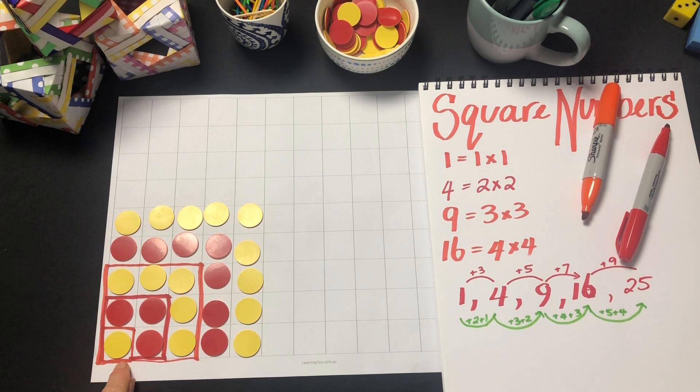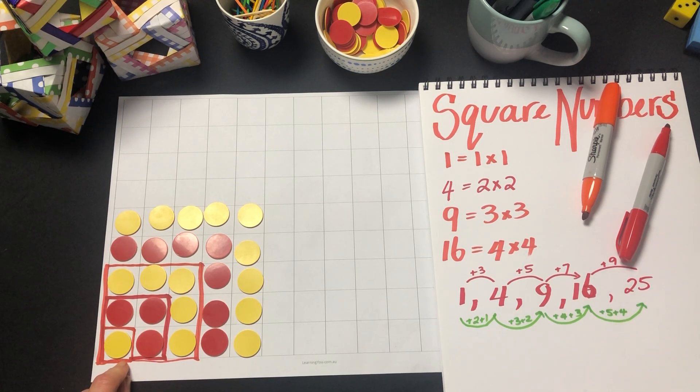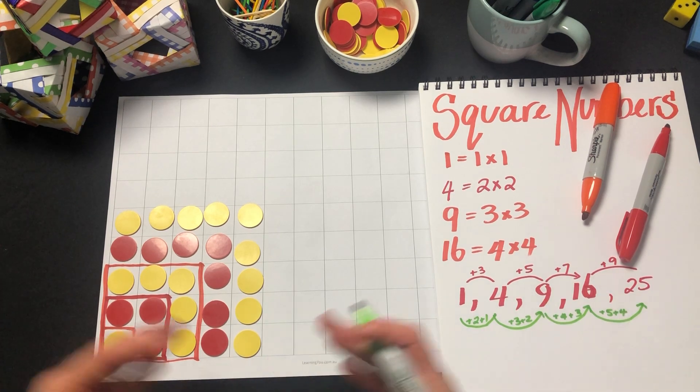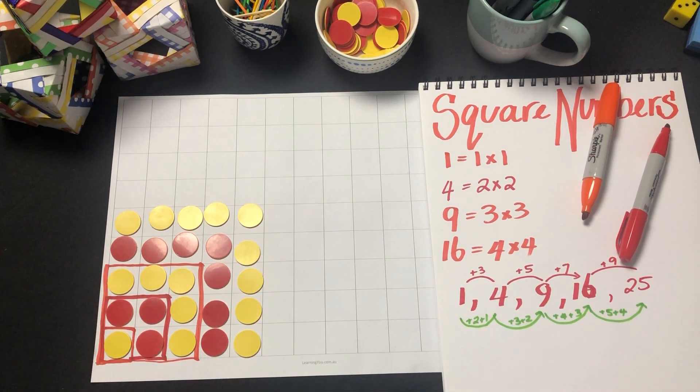The side length would be our square root. So in other words, the square root of something like 4 is 2 because its side is 2. The square root of 9 is 3 because the side is 3. And the total area when we're using a grid like this is the square number.